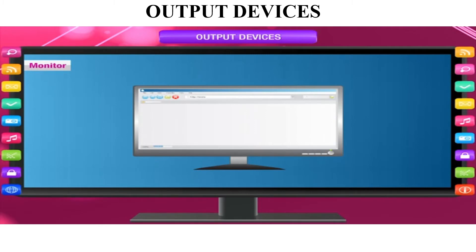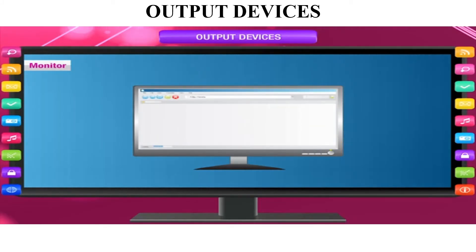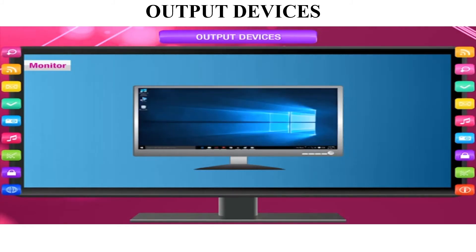The monitor looks like a TV — it displays numbers, special symbols, drawings, and games. There is a button at the bottom right corner to turn the monitor on and off. When the computer is on, the amber light is on; when off, it turns off. This button works the same way as a TV on/off button.